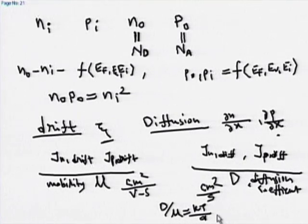Those are the things discussed yesterday. Today we will discuss two other important things. Our philosophy so far is: what are the carriers? Electrons and holes. How can we increase carriers? By doping. How do carriers move? By drift and diffusion. Now, when it comes to solar cells, two important events take place: generation of carriers and recombination of carriers.